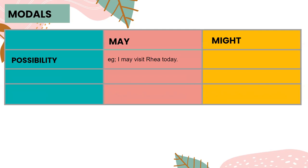Americans also use might when may could fit in. So instead of saying I may visit Ria today, an American might also say I might visit Ria today, meaning there's about a 50% chance that you will see Ria. So may and might are largely interchangeable for expressing possibility.